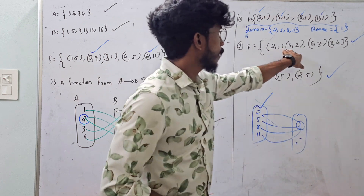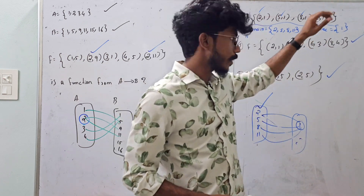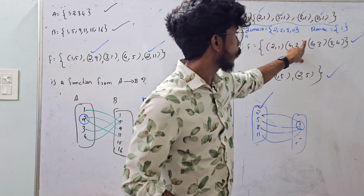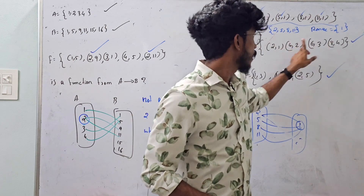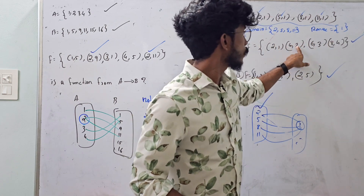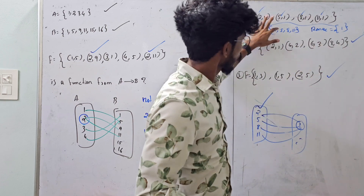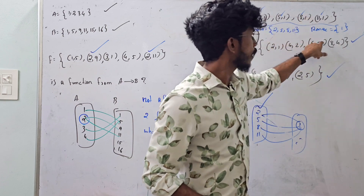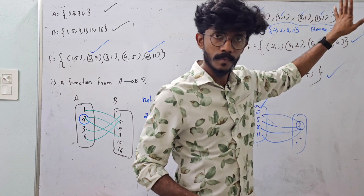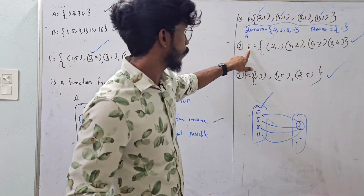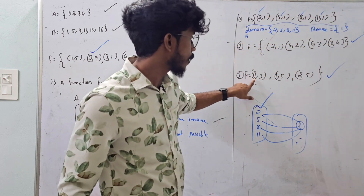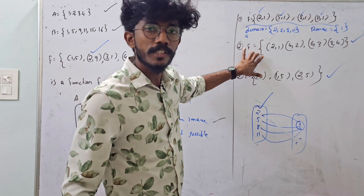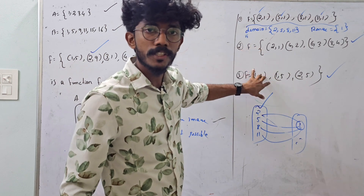If you put in the domain, you will find the domain and the range is 1, 2, 3, 4. If you put the domain, then you can check the domain and range.